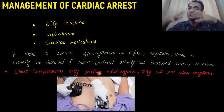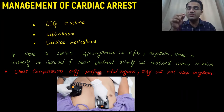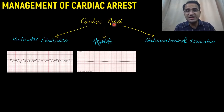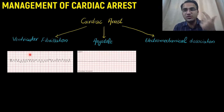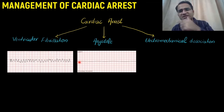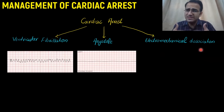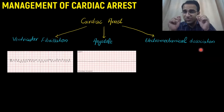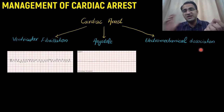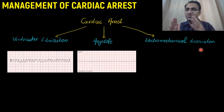Chest compressions only perfuse blood to vital organs — they give you time to perform defibrillation and stop the arrhythmia. On ECG, you can see ventricular fibrillation or ventricular tachycardia. In asystole, you see a flat line because there is no systolic contraction and no electrical activity. Electromechanical dissociation can present with either a normal or abnormal ECG, but the most important thing is that even with electrical activity present, the pulse will be absent.